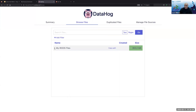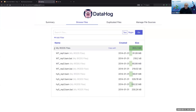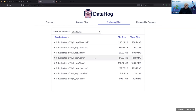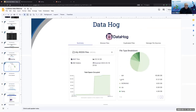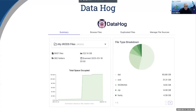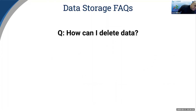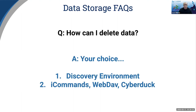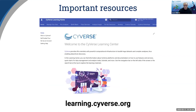There's a way to browse and look through files in more detail, and if there were duplicates, that's also a place where you could be selective about what to delete. DataHog is definitely something you want to take a look at. The next question is: how can I delete data? It's not necessarily hard, but it may not be as simple as clicking something and it's gone. Each tool I showed — iCommands, WebDAV, CyberDuck — also gives you the ability to delete things.